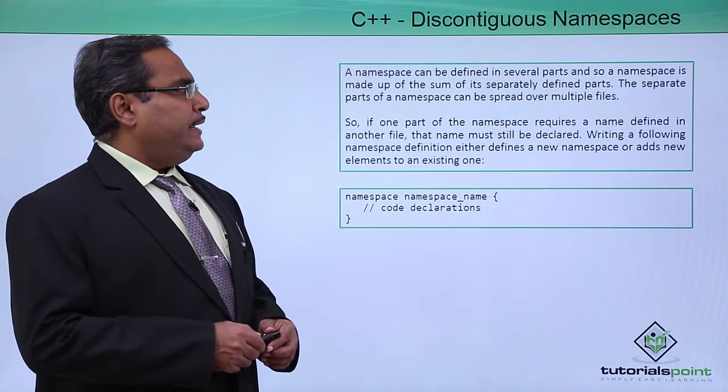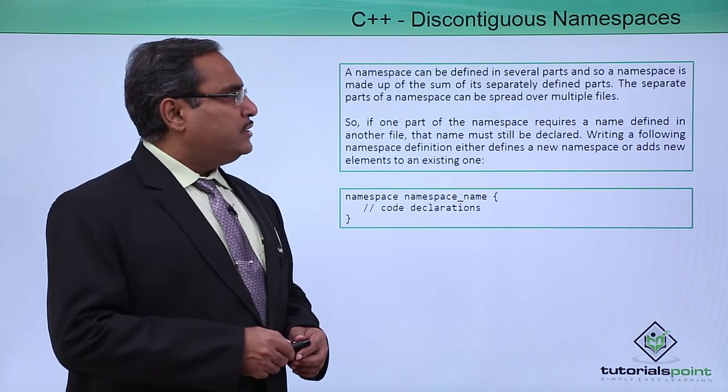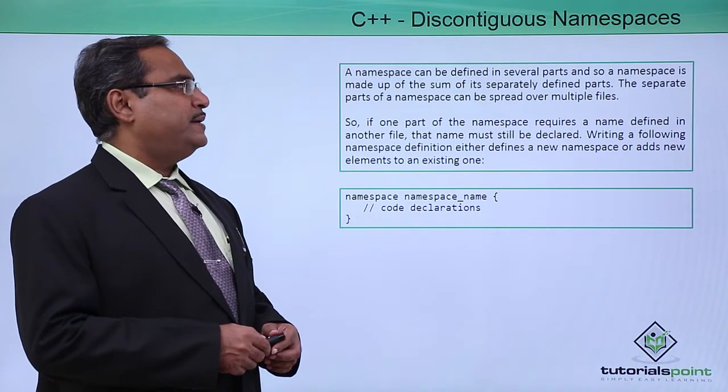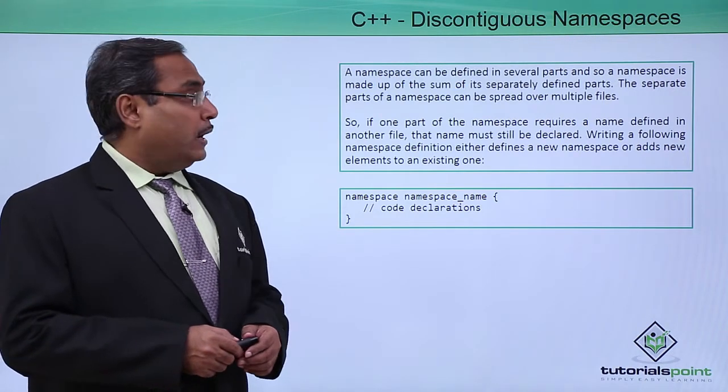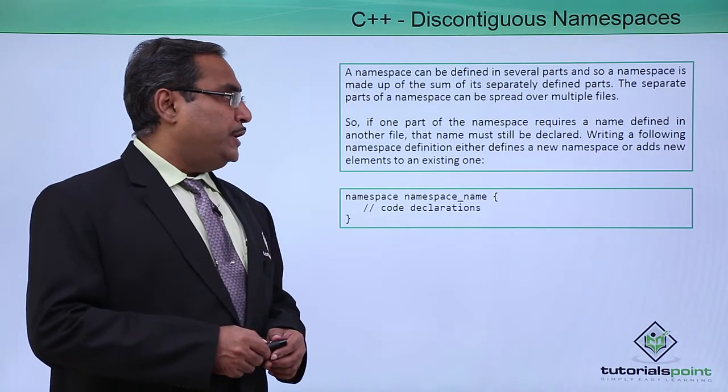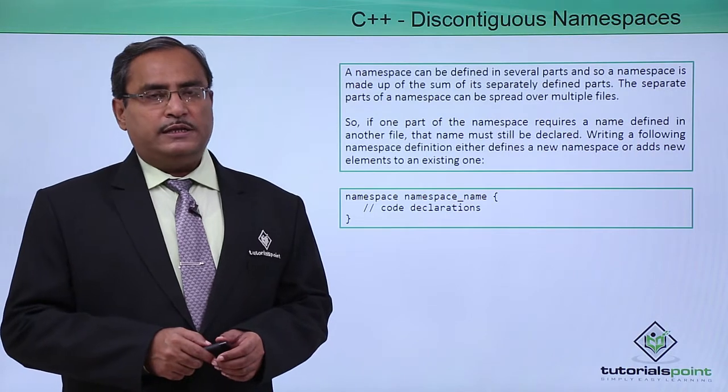A namespace can be defined in several parts, and so a namespace is made up of the sum of its separately defined parts. The separate parts of a namespace can be spread over multiple files.